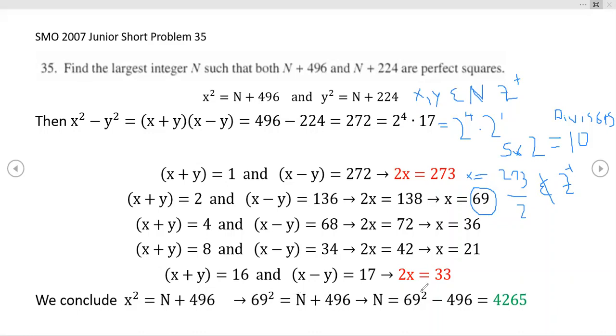After you do the arithmetic, you get this as your final answer: 4265. 4265 is the largest integer such that the conditions prevail. You could have asked what is the smallest one, and that would correspond to this. Back in 2007, they went for the larger one. Hope you enjoy.